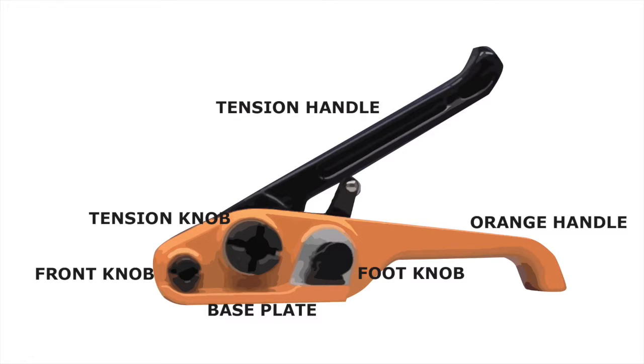You will see that your strap tension tool has three knobs. The front knob is the blade, the center knob is the tension turning knob, and the final knob is the foot. This will hold the strap along the base plate.